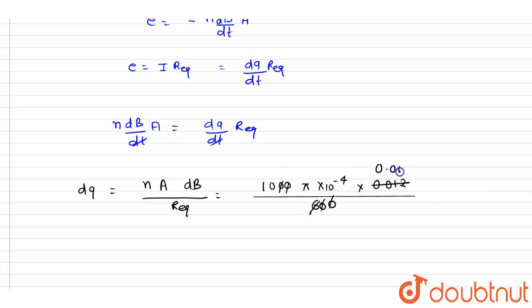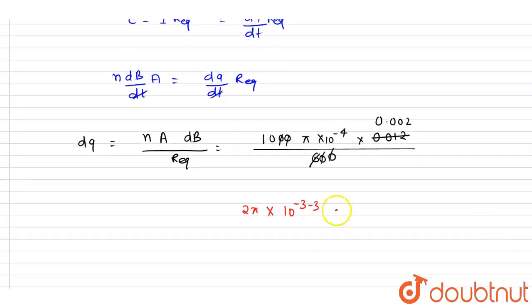And you will write 0.002, now this is 2 into 10 to the power minus 3. So I will write down 2 pi into 10 to the power minus 4 plus minus 3, it will be minus 3. And here also this is 10 to the power minus 3. So I will write down this will be the charge flown in coulomb.